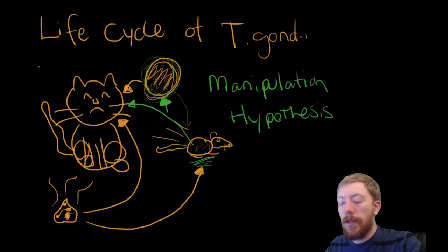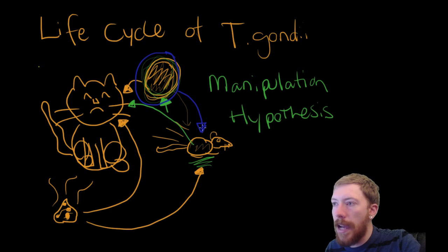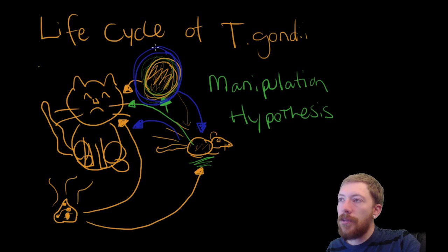So, what the authors of this paper are asking is, can the parasite T. gondii change the behavior of the rat such that the rat becomes less afraid of the cat? And in doing so, you would expect that T. gondii can increase its rate of transmission.